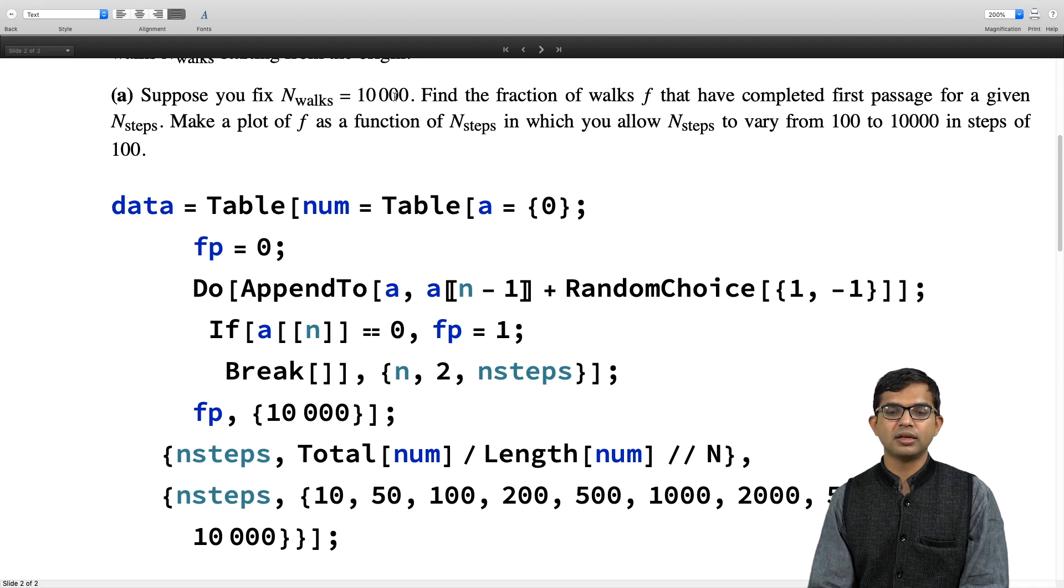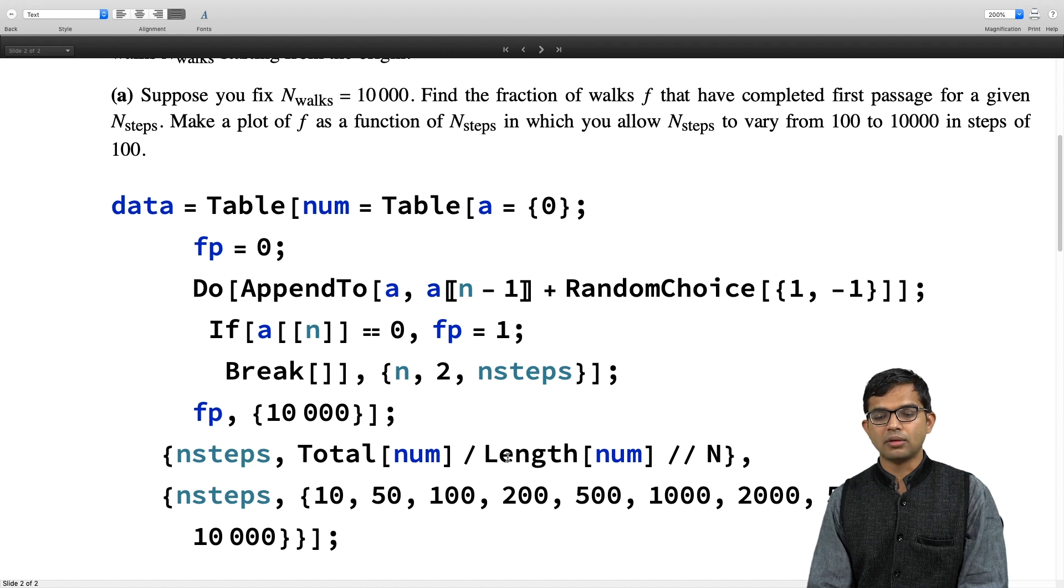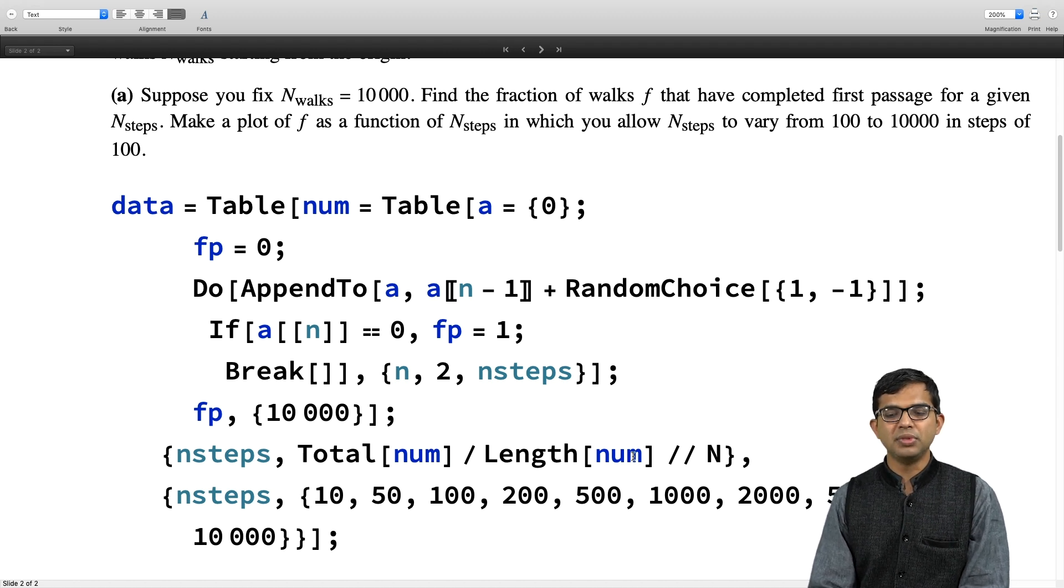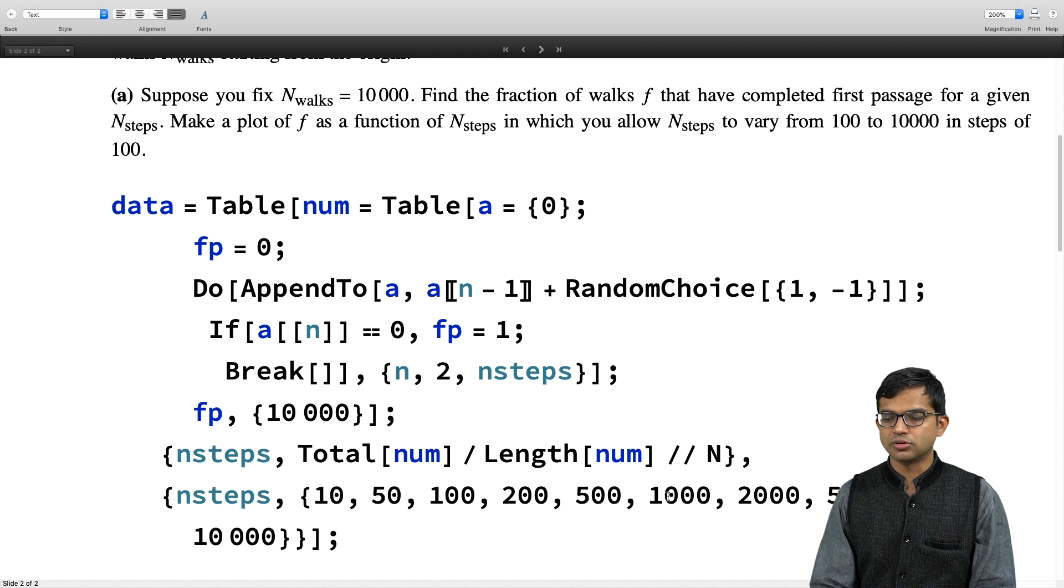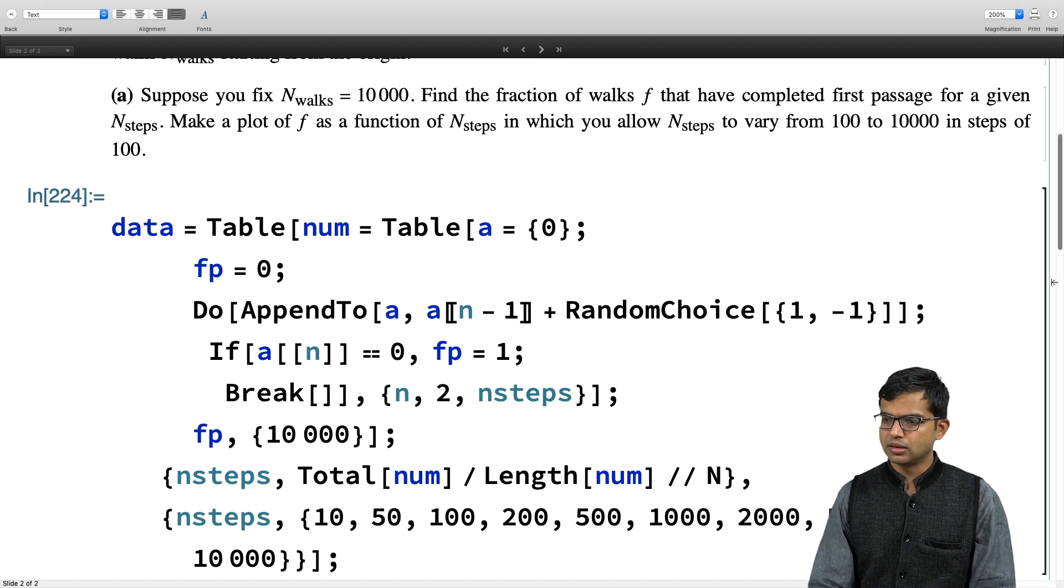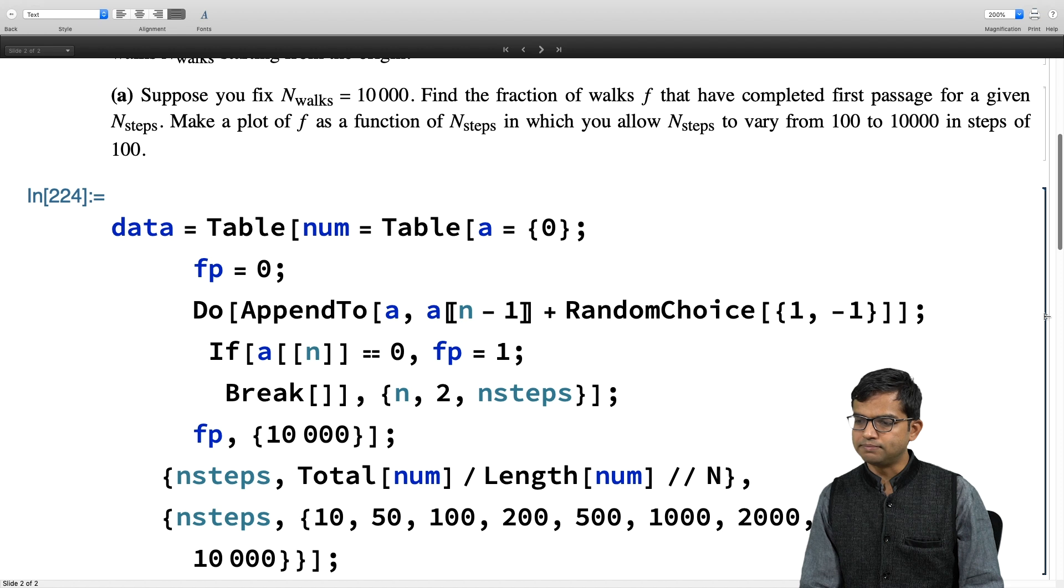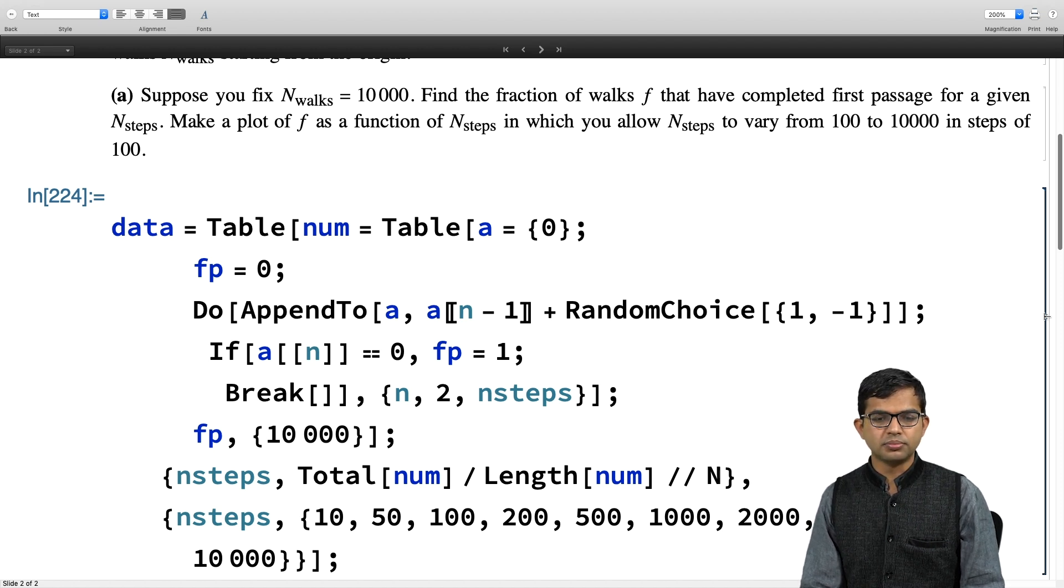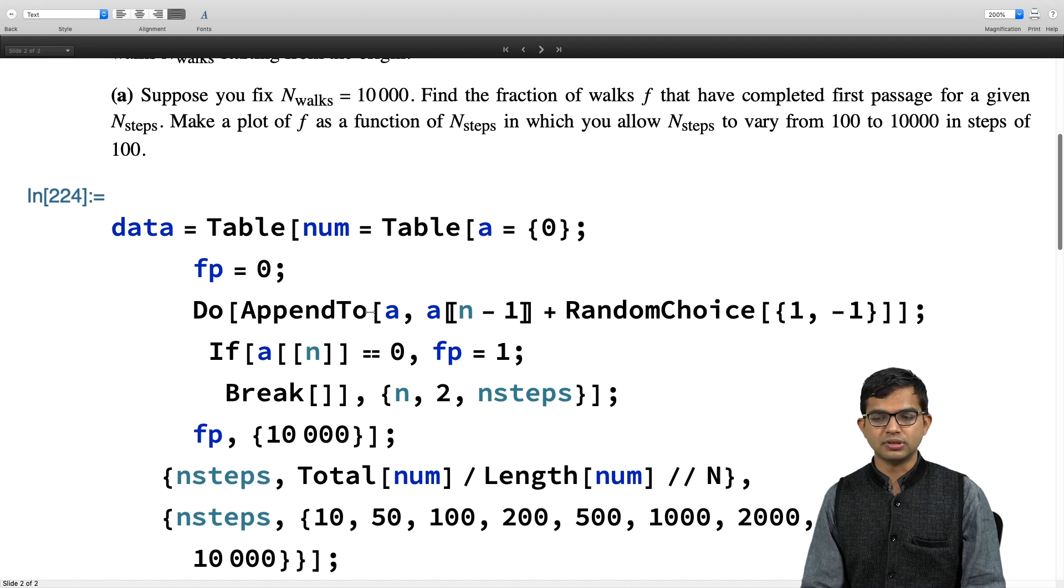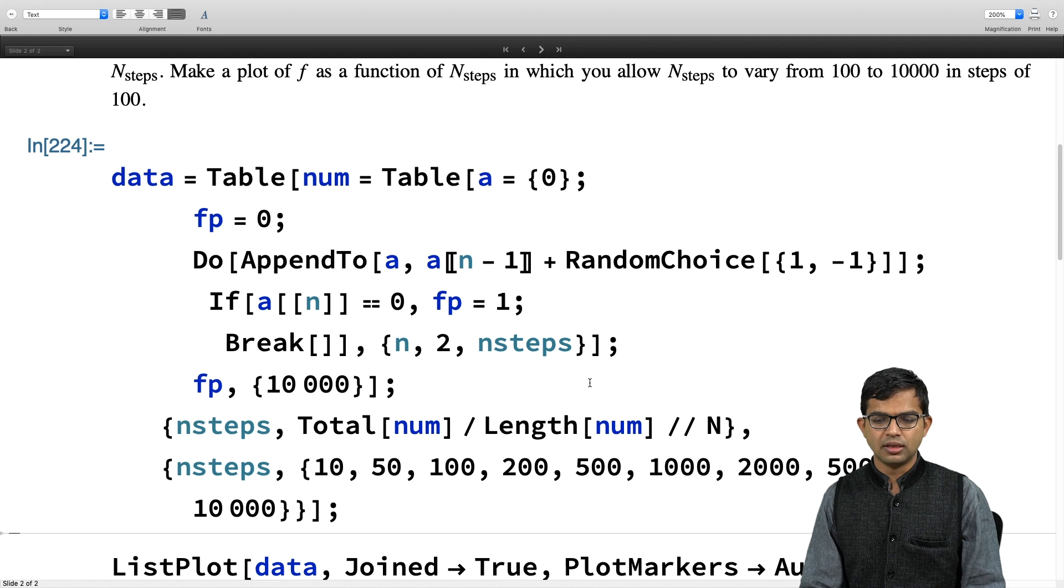And then I just note down fp. And then I do this 10,000 times. Then I will note down the number of steps, n steps. Then I will do total of num divided by length of num, which is actually nothing but the mean of num. And then I will allow n steps to take all these values: 10, 50, 100, 200, 500, 1000 and so on, all the way up to 10,000. Let me go ahead and run this.